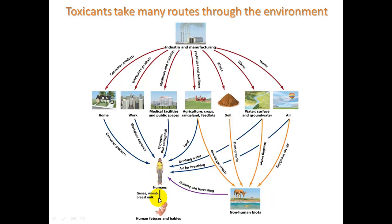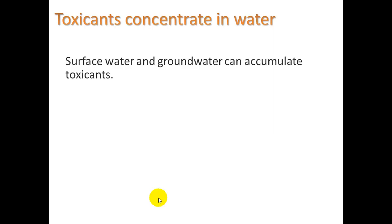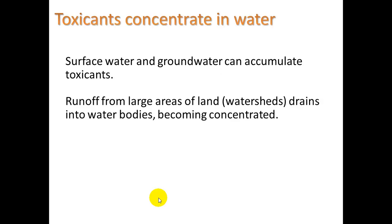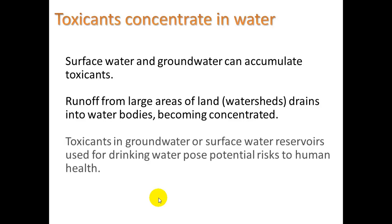Once chemicals are in our bodies, they can also go into the bodies of our developing fetuses and babies. So this is an important topic in environmental health. Toxicants concentrate in water — surface water and groundwater can accumulate toxins because we're dealing with runoff from large areas of land, called a watershed, that drains into water bodies, becoming concentrated. Toxicants in groundwater or surface water reservoirs used for drinking water pose potential risk to human health.